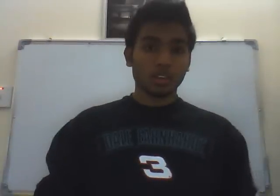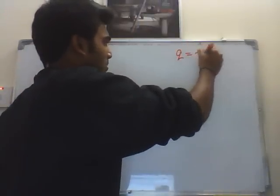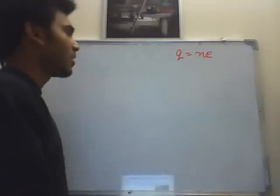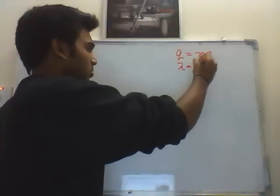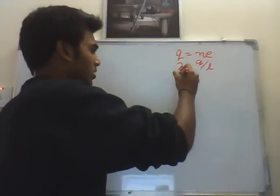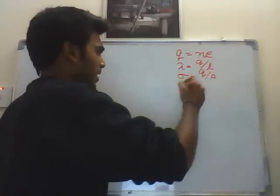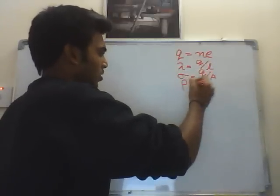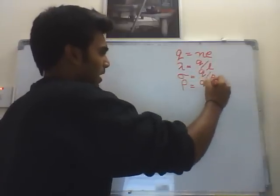Alright, so we've learned a couple of formulas. We've learned that the charge is an integral multiple of the charge of an electron. We've learned what linear charge density is, which is q by L. We've learned what surface charge density is, which is q by A. And lastly, we've learned that rho is equal to q by V.